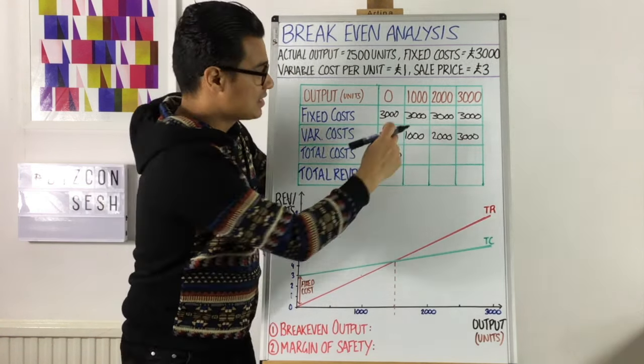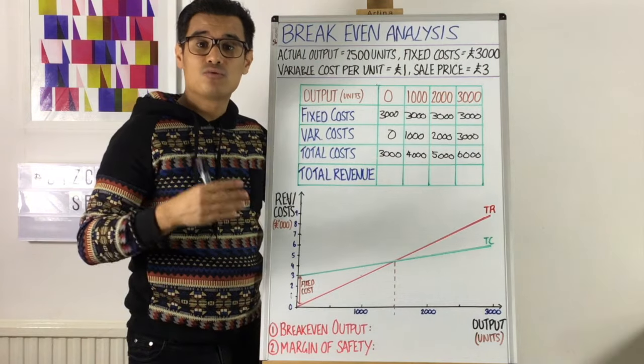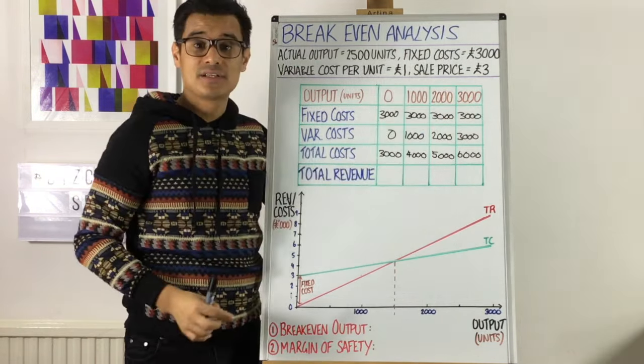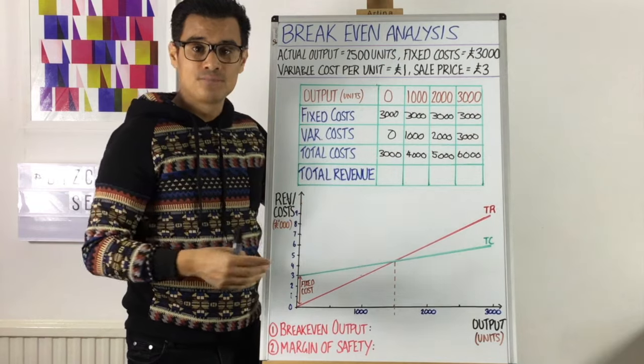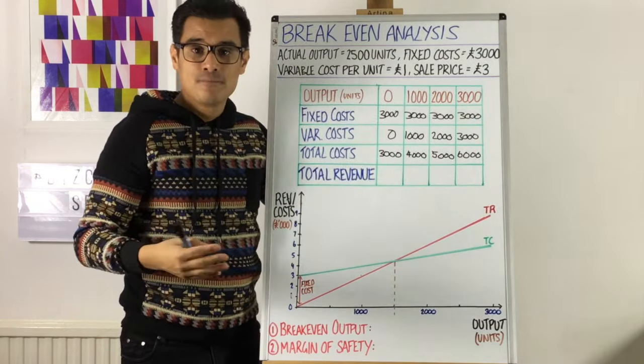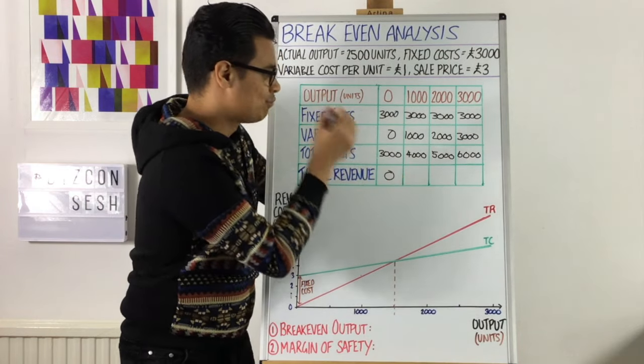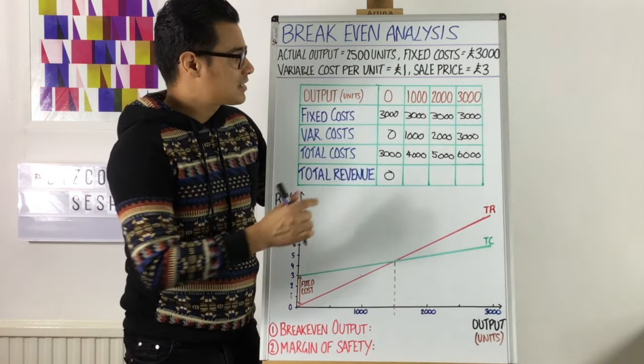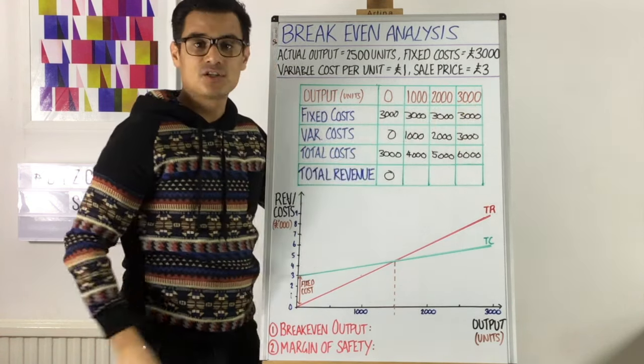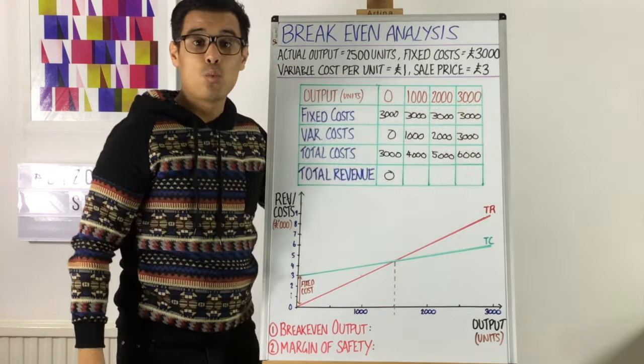Now the next column we want to work out is the total revenue. And we know that revenue is the price. In this case, the sale price is £3. And we times that by how many have been sold. So we assume that the output is all sold here. So 0 times by 3 is 0. So if you make nothing, then you're not going to make anything in terms of revenue. So clearly, your total revenue will be 0. Now the next case is you have an output of 1,000 units. And if you sold all 1,000, your sale price would be £3,000.